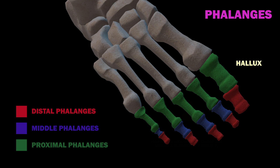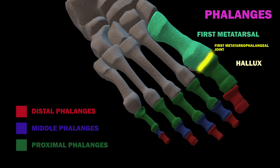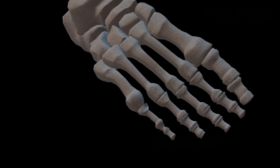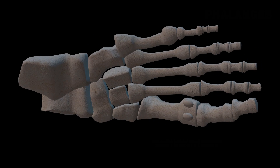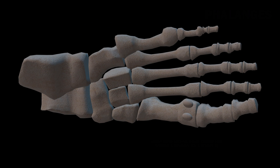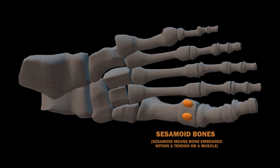Since the big toe attaches to the first metatarsal, the joint between the first metatarsal and the big toe is called the first metatarsophalangeal joint. Under the distal portion of the first metatarsal are the sesamoid bones, two small round bones where the ball of the foot is.